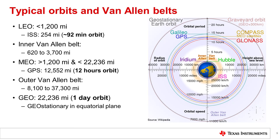For the LEO orbit examples, we have the International Space Station and the Hubble Telescope. For the MEO orbits, they are commonly for position, navigation, and timing-type satellites, sometimes referred to as GPS constellations. The last type is the GEO orbits on the outer ring of the diagram, which are commonly communication-centric. And then beyond that is the graveyard or disposal orbit, as it requires a significant amount of fuel to deorbit a GEO satellite back into the Earth's atmosphere.